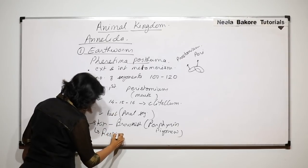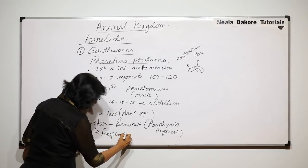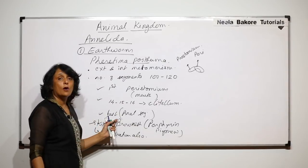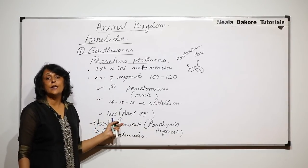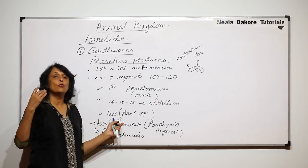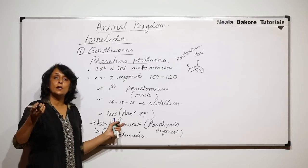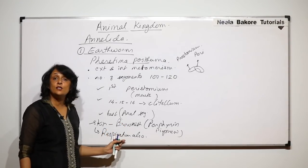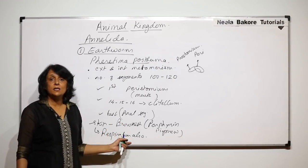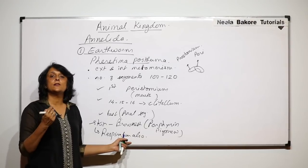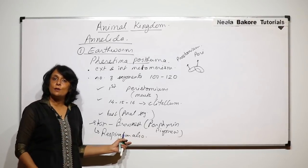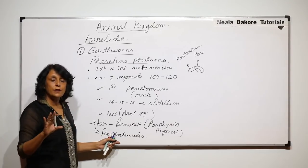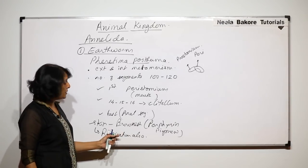The skin is also a respiratory structure, meaning respiration in the earthworm is cutaneous. The skin has three layers: the outer cuticle, the middle epidermis, and the inner muscular layer. The muscles are of both types — circular as well as longitudinal. These are general features common to all annelids.